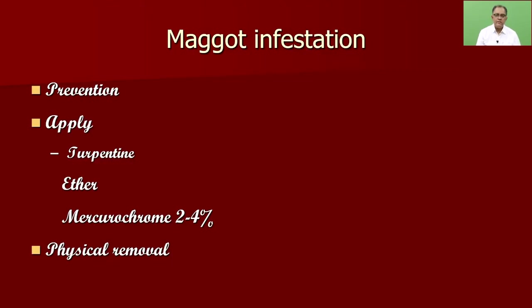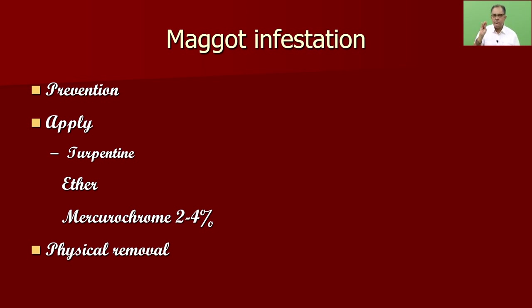For maggot infestation, flies can come and sit on the wound. The easiest thing to do is give a mosquito net — if the patient sits inside a mosquito net, the flies will not come and bother the patient. Once maggots are there, you can use a gauze piece soaked in turpentine and keep it by the side of the wound — the maggots usually come out and you can pick them out with forceps and put them in hot water, so physical removal can be done.